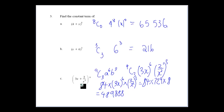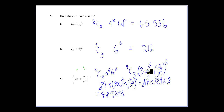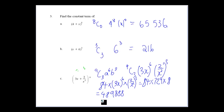That gives us 216 because 3C3 is 1, so it's just 6 cubed. In this situation, considering this as an A and B situation, we get 9C3 times A to the power of 6 times B to the power of 3. For a constant term, we need x to the power of 6 on top and x to the power of 6 on the bottom to cancel. So we get 84 from 9C3, 3 to the power of 6 is 729, and 2 cubed is 8, and there's our constant term.